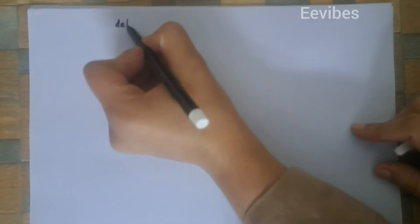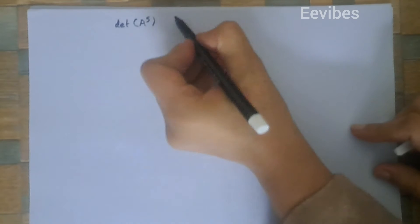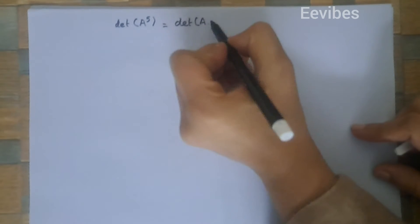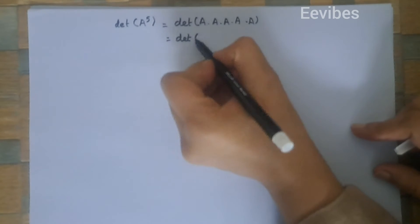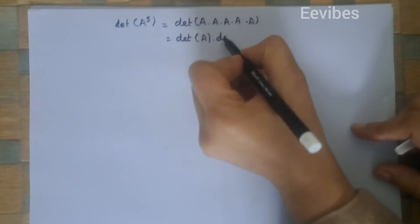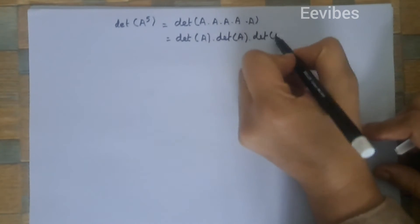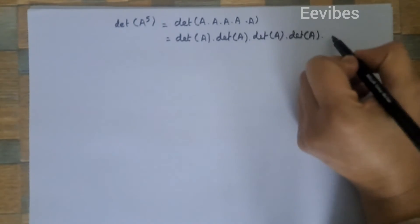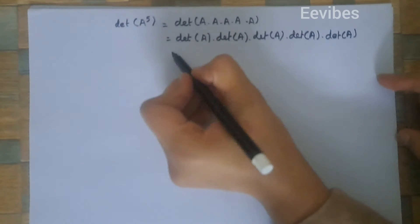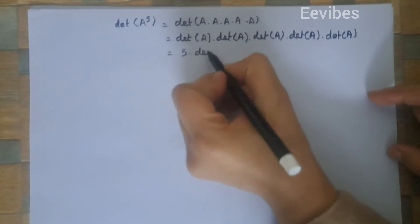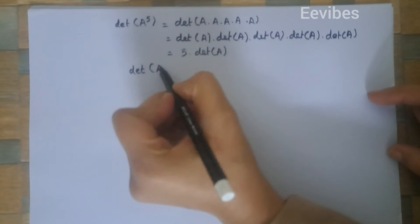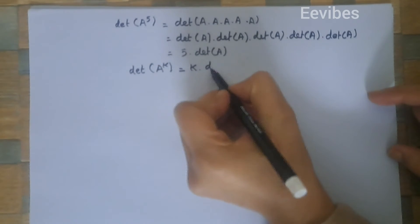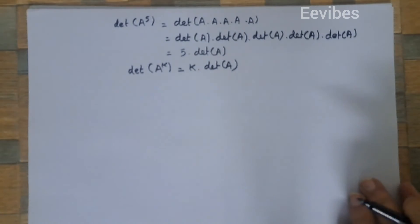We can extend this theorem: determinant of A raised to power five equals determinant of A times A times A times A times A, which is the determinant of A multiplied five times. For the generalized representation: determinant of A raised to power k equals k times the determinant of A — meaning [det(A)]ᵏ.